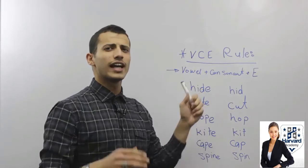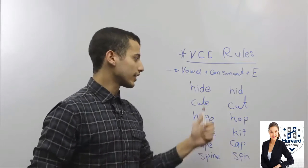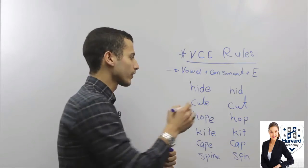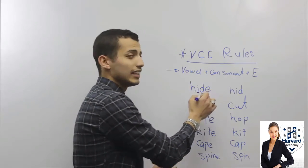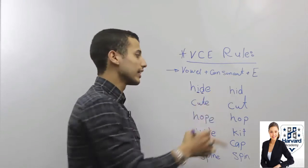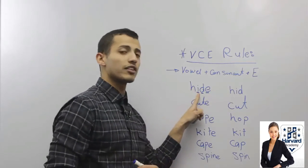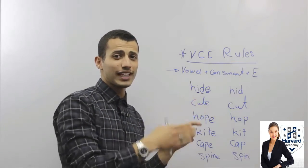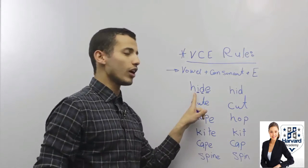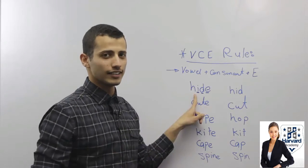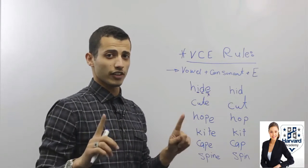the vowel as you pronounce it in the alphabet. What does it mean? For example, this word here — see, it ends with a vowel, then D which is a consonant, and then E. So I'm going to pronounce this vowel as I pronounce it in the alphabet, which is 'I'.